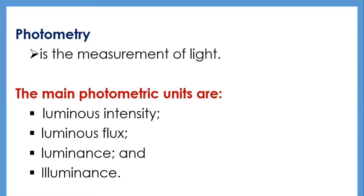Photometry is the measurement of light. The main photometric units are luminous intensity, luminous flux, luminance, and illuminance. The SI unit of luminous intensity is the candela (cd). An imaginary point source of one candela will emit light in all directions; a source of greater intensity will emit more light. The intensity of the source itself does not depend on the distance from which it is viewed, but the strength of the light at the edges of an imaginary sphere will depend on viewing distance.